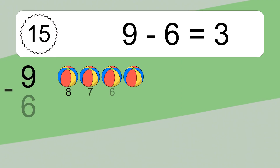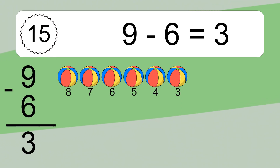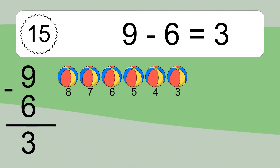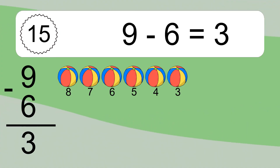9 minus 6 equals what? 9 minus 6 equals 3. Let's count it: 8, 7, 6, 5, 4, 3.